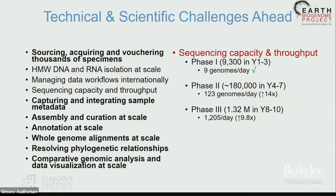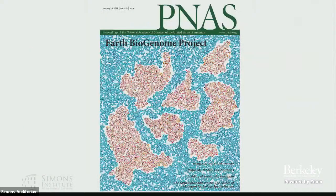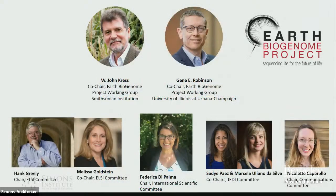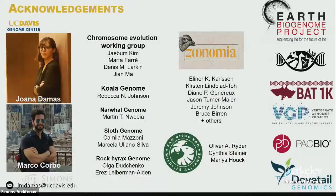The computational challenges include resolving phylogenetic relationships, doing whole-genome alignments at scale — the biggest problem we face — and annotation at scale. There are 10 papers published in a special issue in PNAS earlier this year on these topics. Thanks to my co-chairs John and Gene, and committee chairs including Hank Greeley at Stanford chairing the ELSI committee, Melissa at George Washington University, Federica, Sadie at Rockefeller, Marcella at Sanger, the folks from my lab, the Chromosome Evolution Working Group, and the Zoonomia Consortium. These are really big collaborations with a lot of people working together on important problems.